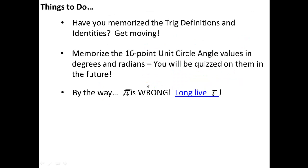And that's all there is to radians and degrees. We need to be able to convert back and forth, and we need to be able to find coterminal angles. Also: I gave you an assignment in the last lesson to memorize your trig definitions and those reciprocal and quotient identities. Are they memorized? On top of that, you need to be working on memorizing your 16-point unit circle in both radians and degrees. You'll be quizzed on all of this in the future.